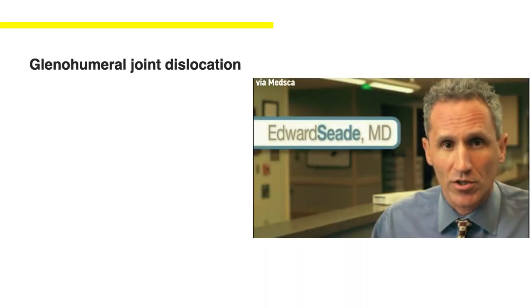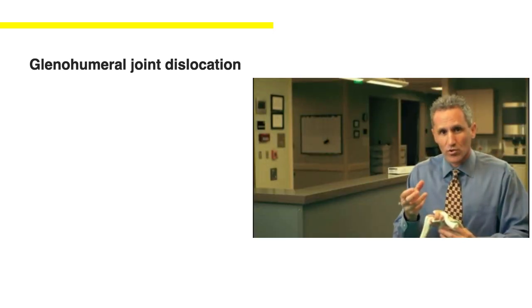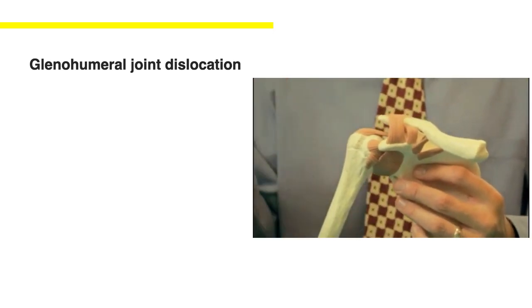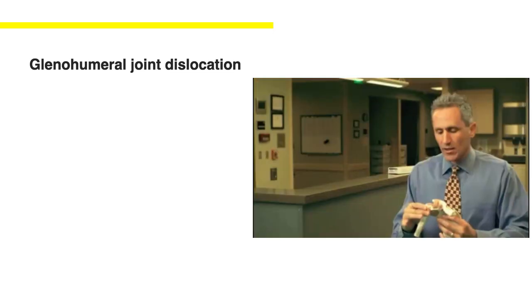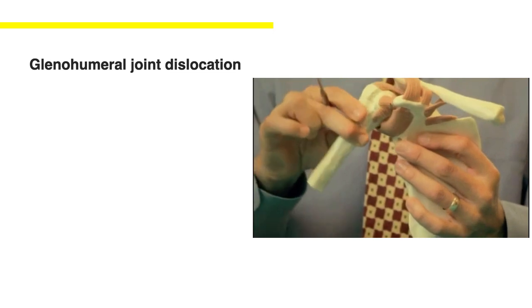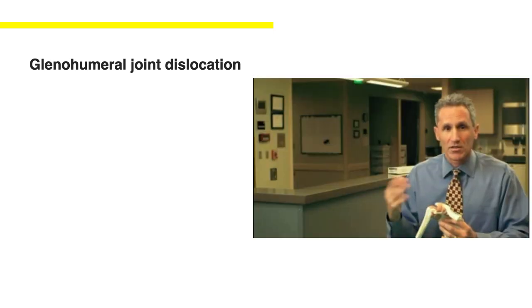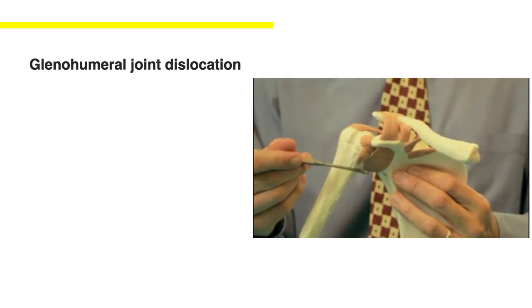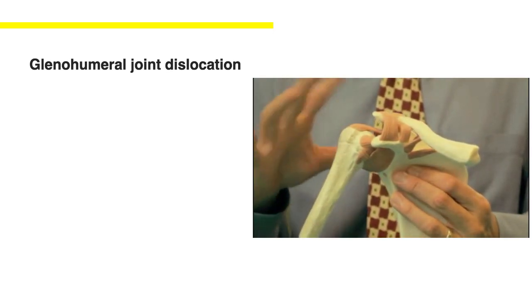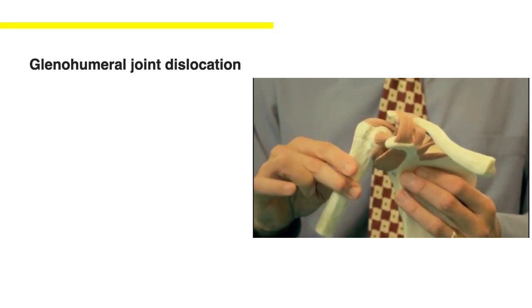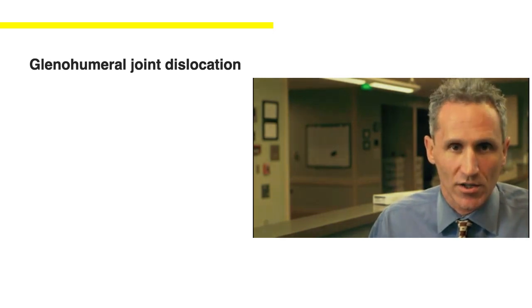With shoulder instability, the ligaments in the shoulder — the structures deep down inside underneath all the muscles — hold the shoulder joint together. When these ligaments are torn, from trauma or other injuries, they render the joint unstable and the shoulder will pop out, becoming dislocated. This is a right shoulder model, and in this model the ligaments in the very front are torn. Because of that, I'm able to dislocate the shoulder and pop it out of the joint. We refer to this as shoulder instability or shoulder dislocation.